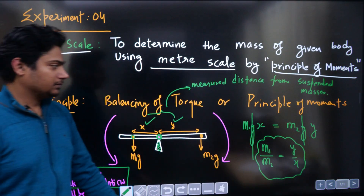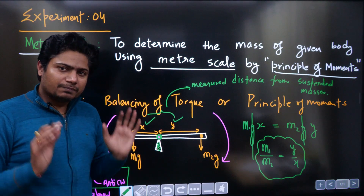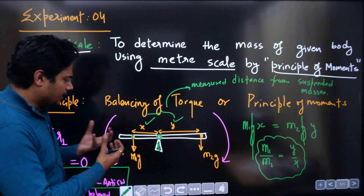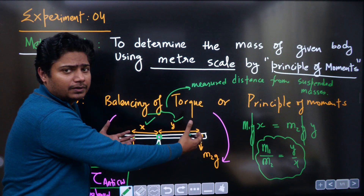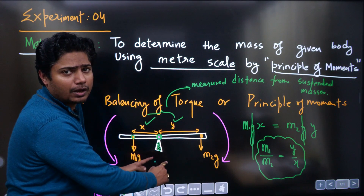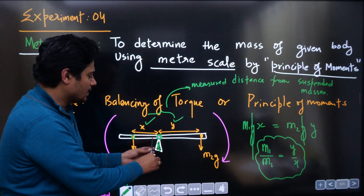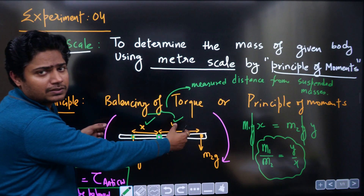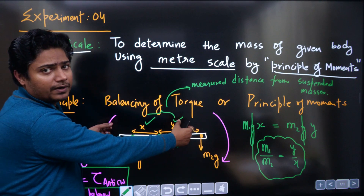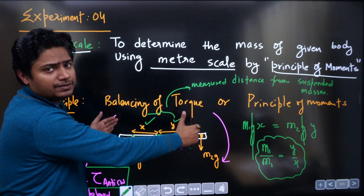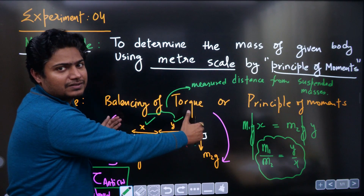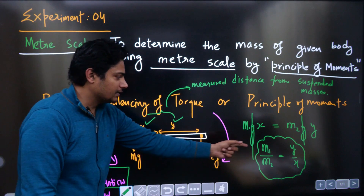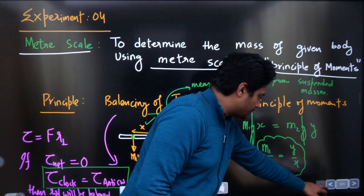So what we are going to do is a simple thing: we will put one known mass on the right side and the unknown mass on the left side, and place it over a wedge — a sharp triangular knife-edge. We adjust the scale on it such that it just remains stable and does not turn. From that we can calculate X and Y and determine the unknown mass.